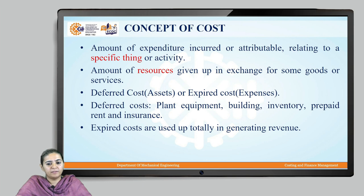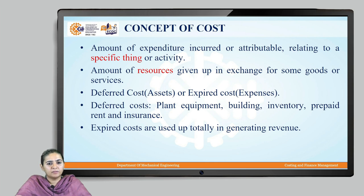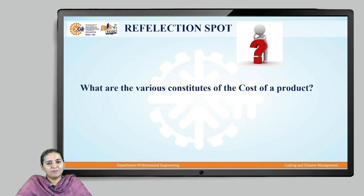Such costs are called deferred costs, wherein a company invests in assets. The other type of cost is called expired cost, also known as expenses. This is basically the cost incurred in generating revenue. An example of an expense could be material cost and labor cost, which is the cost of material useful for producing some product and thereby helps in generating revenue.